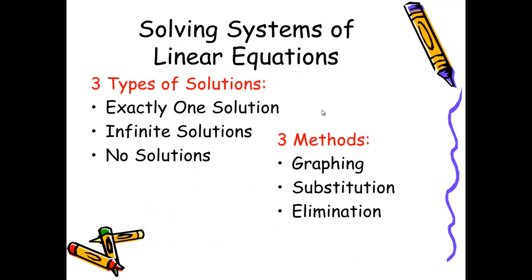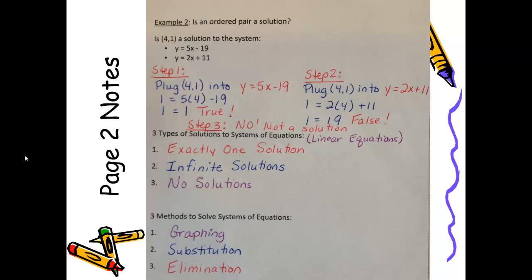When solving systems of linear equations, there are three possible types of solutions — this applies specifically to linear equations. The first situation is when there is exactly one solution, as occurred in the examples we've already looked at. You could also have a situation in which there are infinitely many solutions or no solutions at all. In this unit, we will be learning three different methods for solving systems of linear equations: graphing, substitution, and elimination. This is how page two of your notes should look when completed.